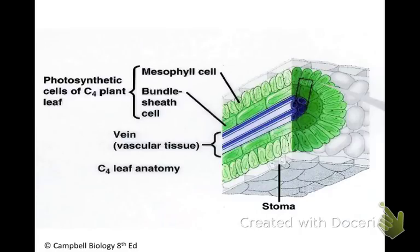A few different types of plants, especially those that evolved in climates where they would often encounter the problem of photorespiration, have developed a few different ways around photorespiration — basically ways to keep CO2 highly concentrated where rubisco is operating. C4 plants are the first type we're going to look at that avoids photorespiration in a special way, and it does this with two different types of cells.